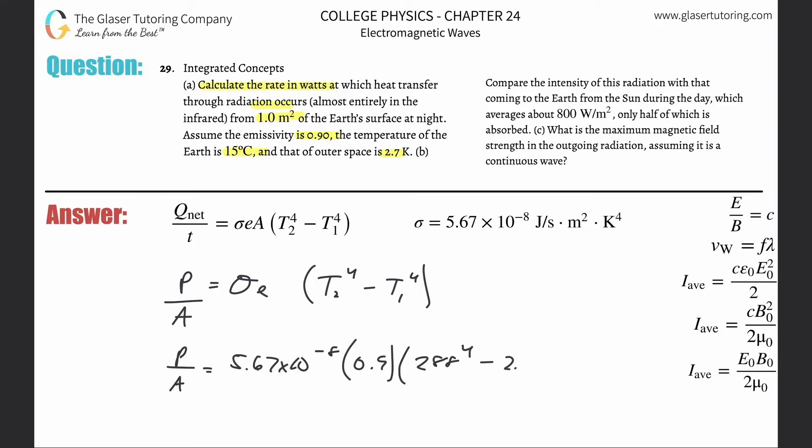Raise to the fourth, minus then 2.7 raised to the fourth. Which one should you put where? It really doesn't matter. The answer is either going to come out negative or positive, but I'm going to just give the absolute value of the positive answer. So this is going to be 5.67 × 10⁻⁸ × 0.9 × (288⁴ - 2.7⁴). You're going to get a value about 351, and that's watts per meter squared.